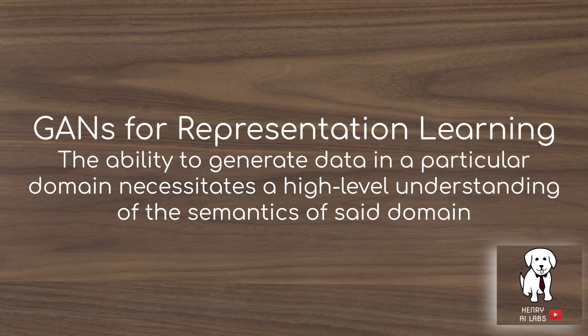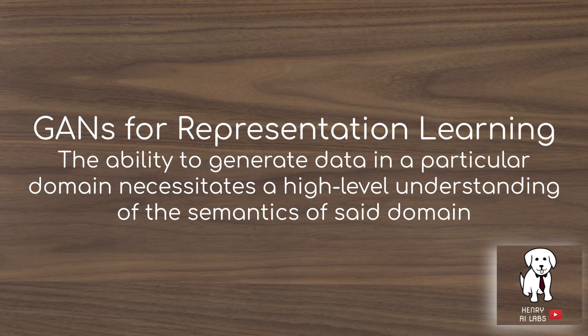For GANs and representation learning, there's a quote from Richard Feynman frequently used in GAN blog posts: "What I can't create, I don't understand." The idea is that the ability to generate data in a domain necessitates a high-level understanding of the semantics of that domain. GANs use deep neural networks with abstract representation learning, compared to autoregressive models with explicit density conditions or variational autoencoders that don't quite have the capacity of a GAN. It's interesting to think about the semantics captured in generative adversarial networks and how we can use these representations for image classification, object detection, or semantic segmentation.